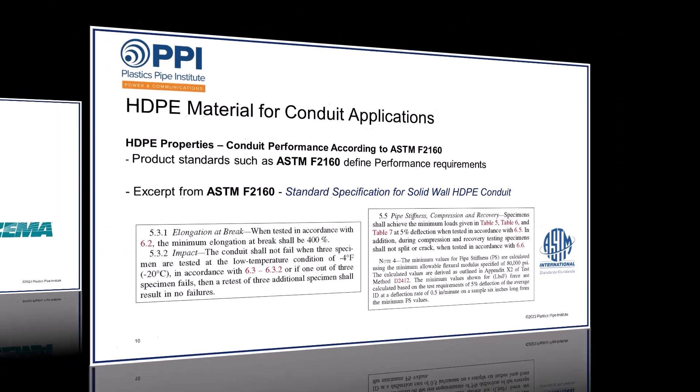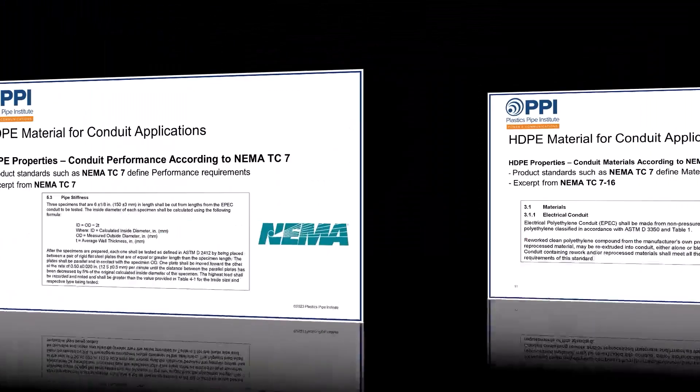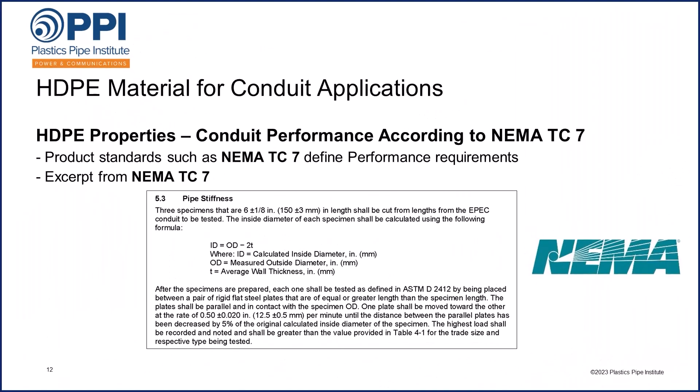Another one of these standards is NEMA TC7, which also defines material requirements. You can see here how they are defined once again in accordance with the ASTM D3350 cell class. Pipe stiffness is also defined within NEMA TC7, as you can see in section 5.3. In a future training session, we will delve more into the specifics of the various standards, but the industry standards are rigorous and ensure the product performs in the applications.